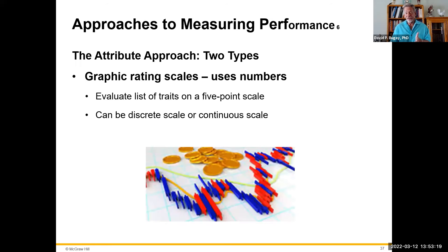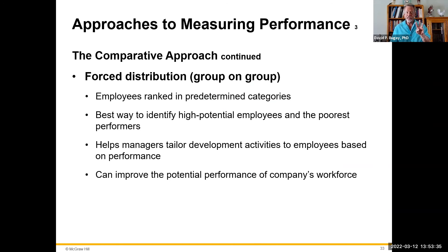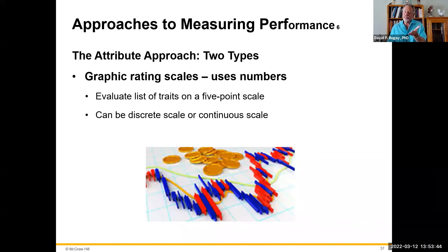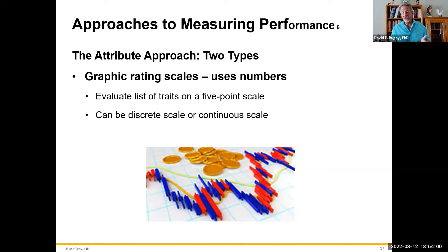The attribute approach is much more common. There are two types. The first is graphic rating scales, which use numbers — you evaluate people on a five-point scale. That five-point scale is called a Likert scale, which is very common in scientific research and is more definitive than a ten-point scale. If you're developing your own scale, a five-point scale is recommended.